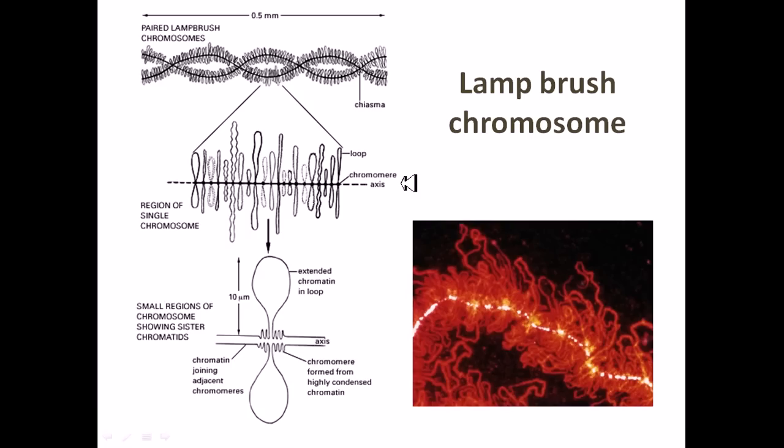The lampbrush chromosome contains lateral loops and appears like a brush, as you can see in this picture. Hence the name lampbrush chromosomes. If you look at this picture, you can see the structure of lampbrush chromosomes.